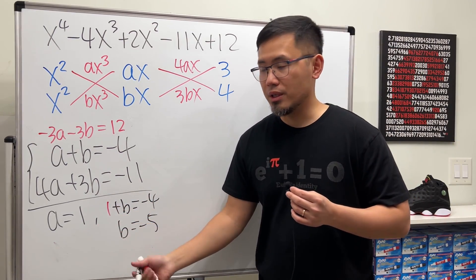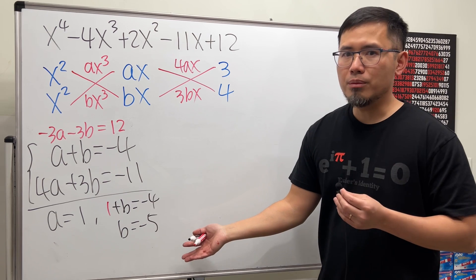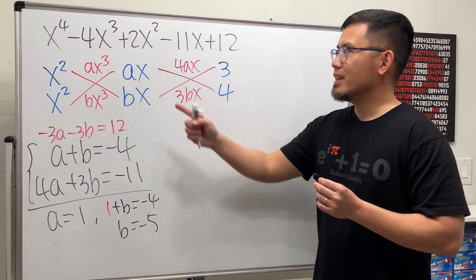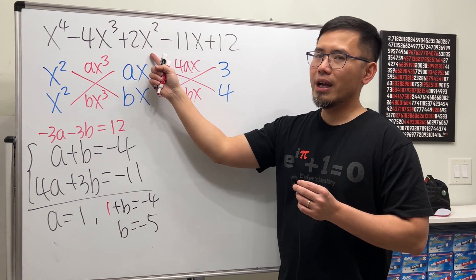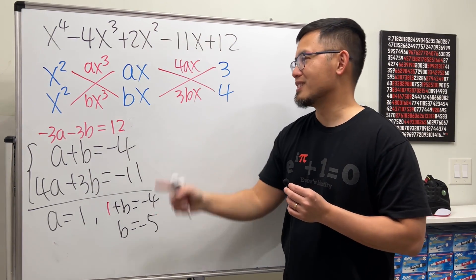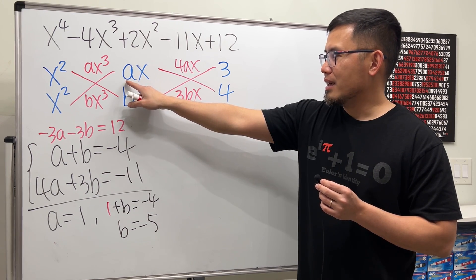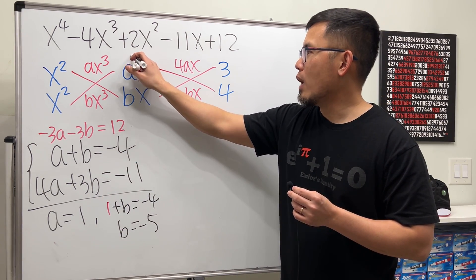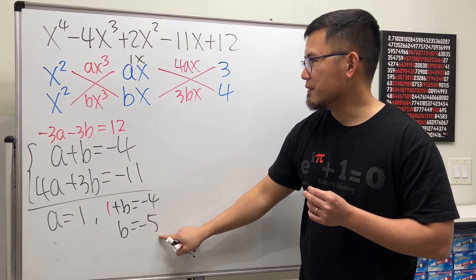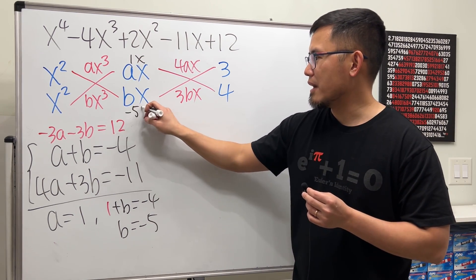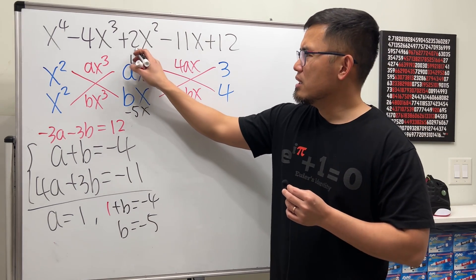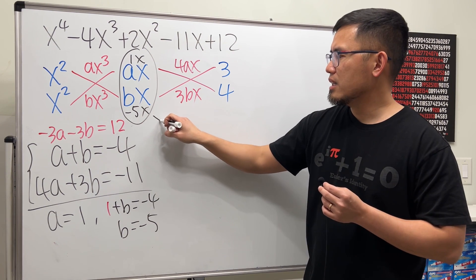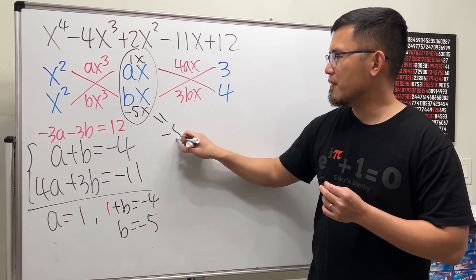Now they are both looking good because at least they are whole numbers. However, we still have to do one final check. Notice we didn't use the 2x squared. Be careful with that. Now, have a look. a we know is 1. So this right here we are talking about 1x. And then b is negative 5. So this right here we are talking about negative 5x. You see, if you just multiply this and that, 1x times negative 5x this right here give us negative 5x squared. This is not equal to 2x squared.